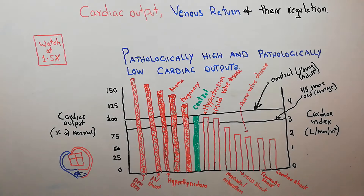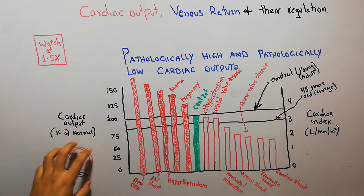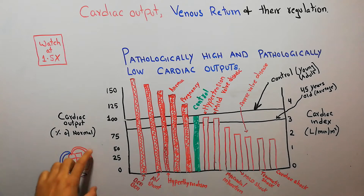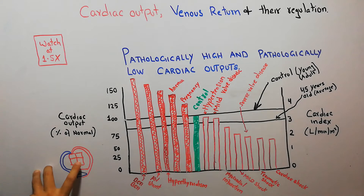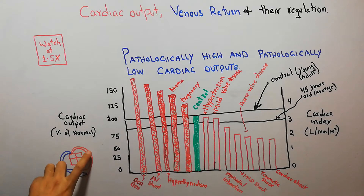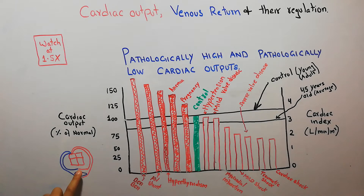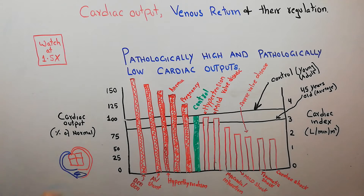Here we have drawn a short circuit of the heart, showing the right atrium, right ventricle, left atrium, and left ventricle. The aorta is bringing blood to the body, the body consumes the oxygen and different nutrients, and the deoxygenated blood returns to the heart.